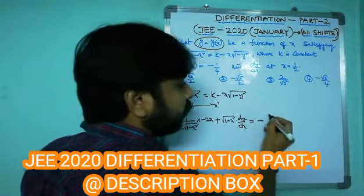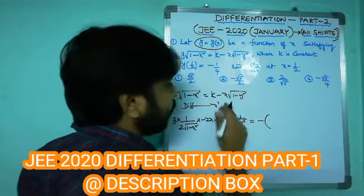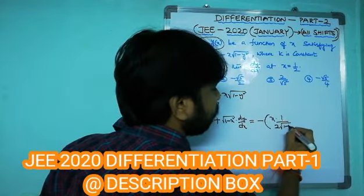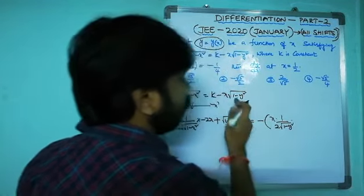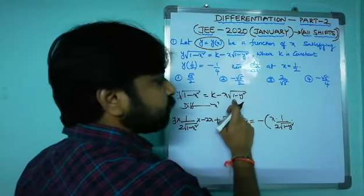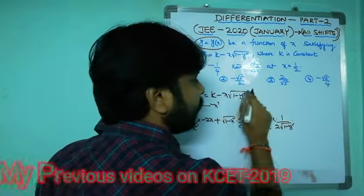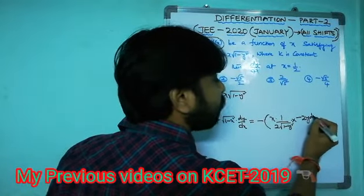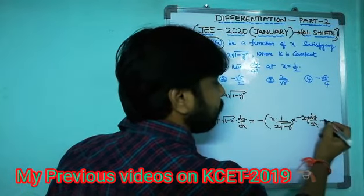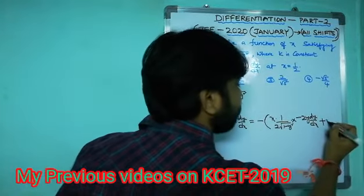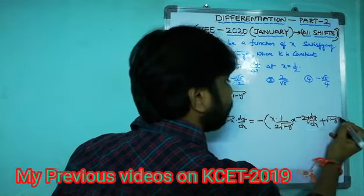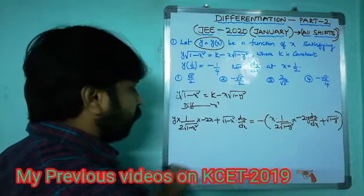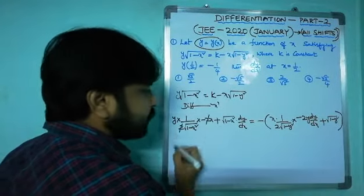On the right side, applying the product rule to x√(1-y²): x times the derivative of √(1-y²) by chain rule gives -y(dy/dx)/√(1-y²), plus √(1-y²). After simplification, the factors of 2 cancel on both sides.